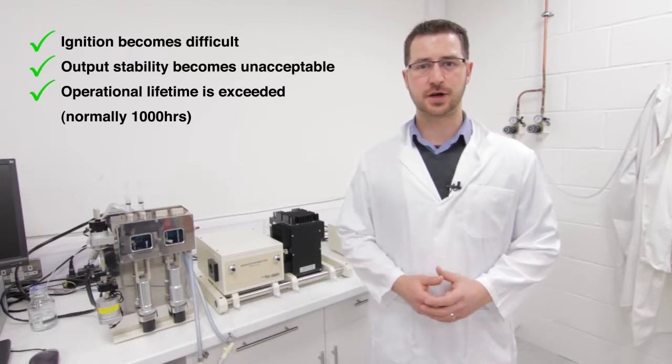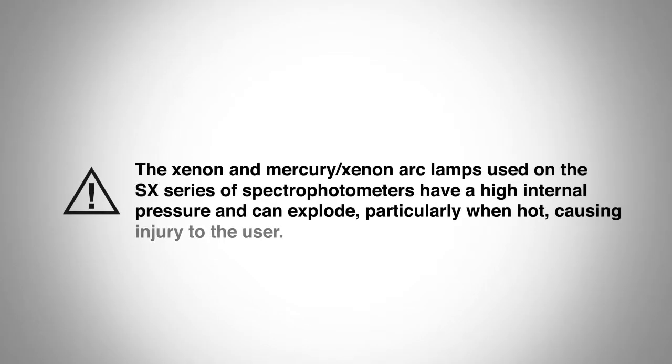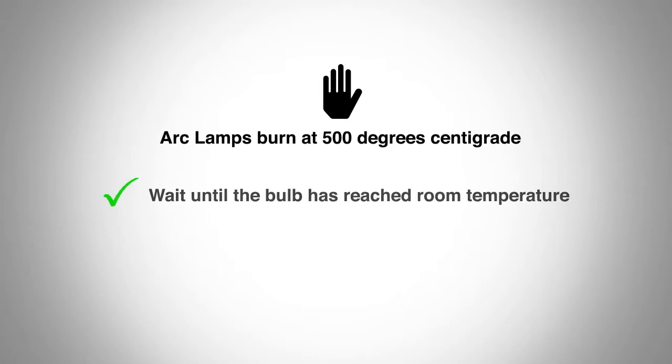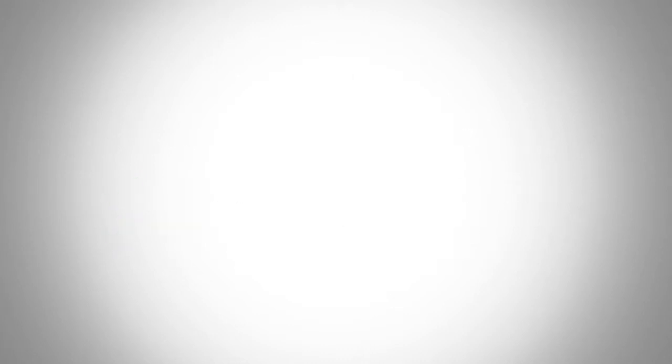But before we start, you should be aware of the following essential safety information. Arc lamps have a high internal pressure and may explode if handled incorrectly. Always handle them with care and avoid touching the glass envelope. These arc lamps burn at 500 degrees centigrade, so be sure your lamp has cooled to room temperature before carrying out a lamp replacement and always wear a face visor.